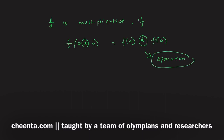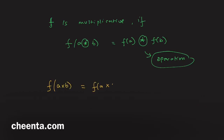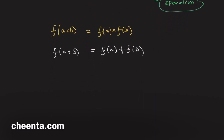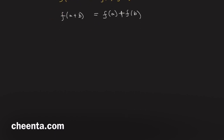For example, ★ could be multiplication: f(a×b) = f(a)×f(b). Or ★ could be addition depending on the context: f(a+b) = f(a)+f(b). Whatever it is, the context will tell you what ★ is.